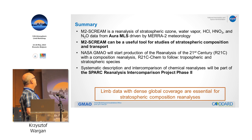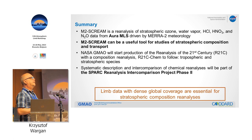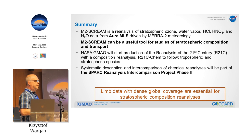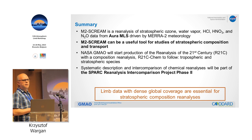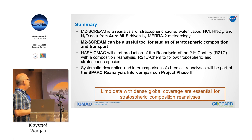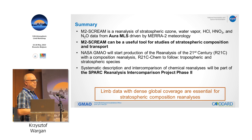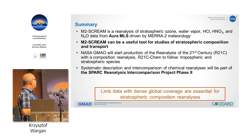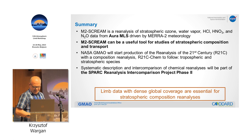The main conclusion is that SCREAM can be a useful tool for studies of stratospheric composition. We are preparing a new reanalysis called R21C — Reanalysis of the 21st Century — which will be built on an updated GMAO meteorological reanalysis and will include a chemistry component as a significant extension of this work. There is also a SPARC reanalysis intercomparison project now in phase two, which will include intercomparison of chemical reanalysis products. And with all of this — we need more MLS. Don't kill it.